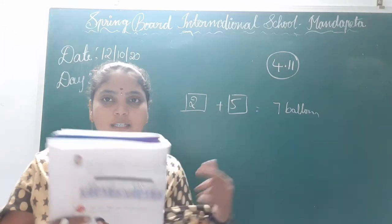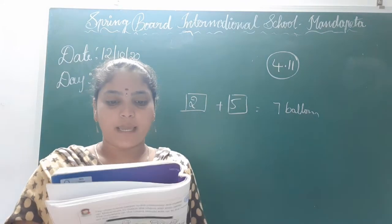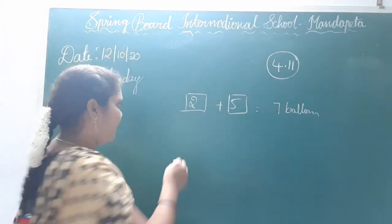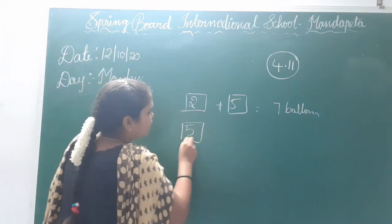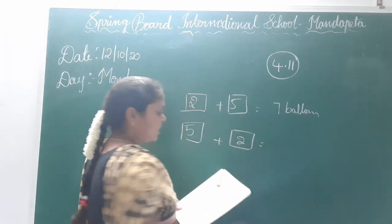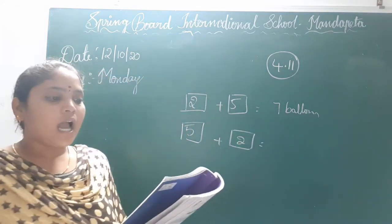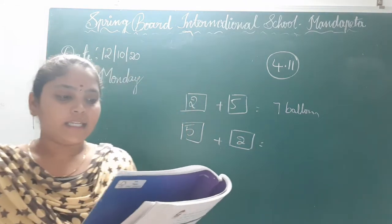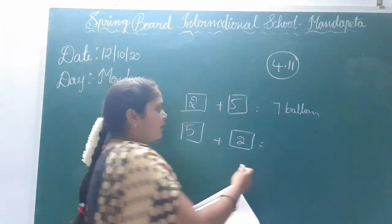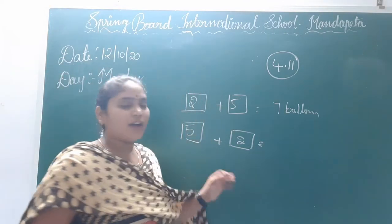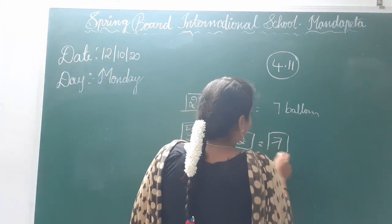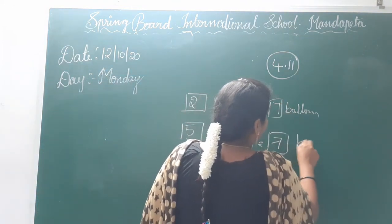Now Maya. Maya drew 5 balloons on one page and 2 balloons on another page. Maya has drawn 5 balloons on the first page and 2 balloons on the next page. Maya has drawn totally 5 plus 2: 5, 6, 7. So she has also drawn 7 balloons.